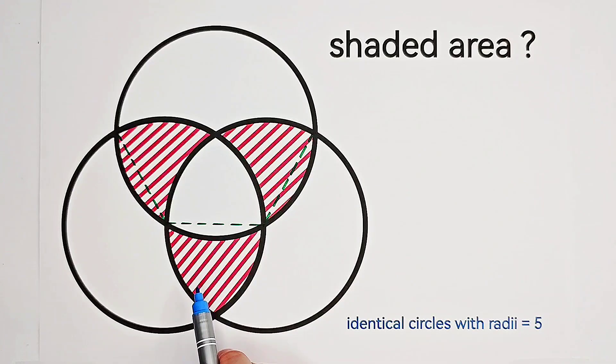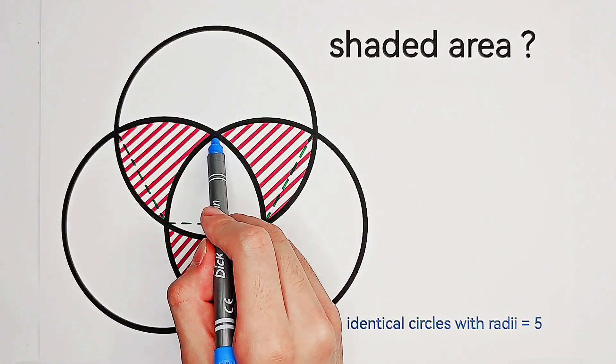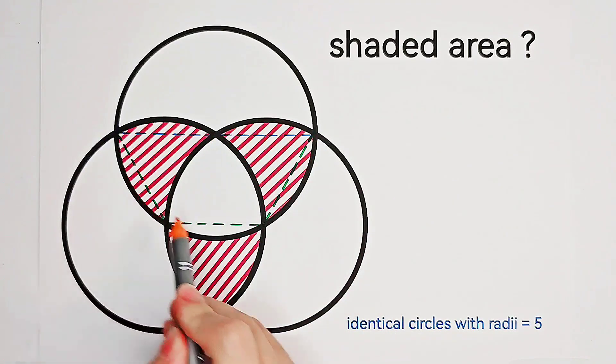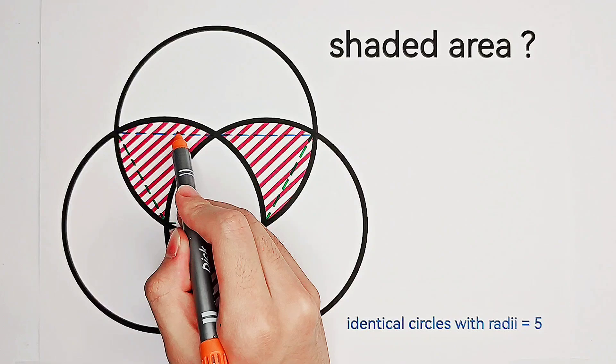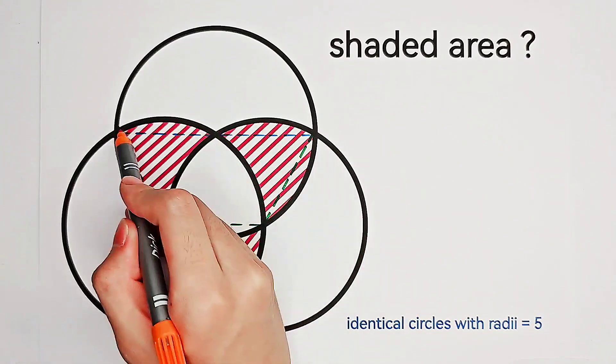So we can do the same thing on the other side. So we connect these two points to this center. So these five arches have the same area. One, two, three, four, five.